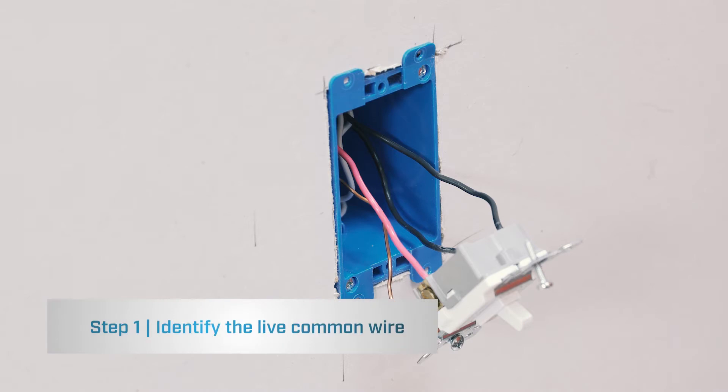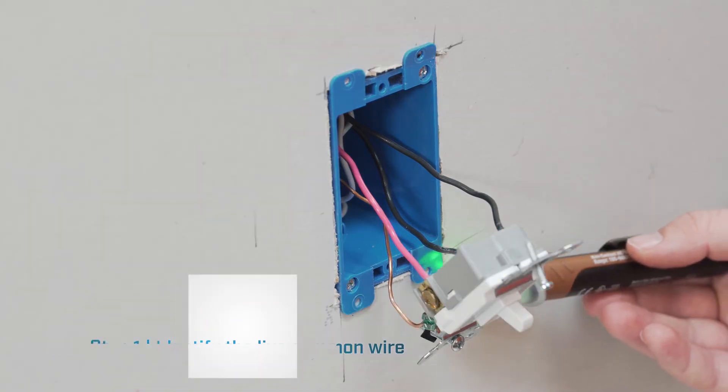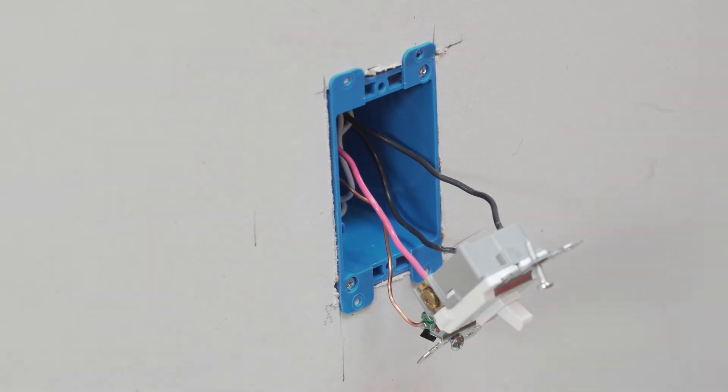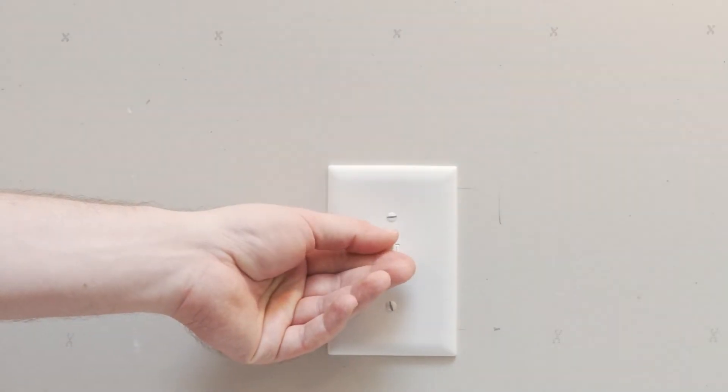You want to use a non-contact voltage detector to determine if the common wire is live. You can see that the detector is indicating that this wire is the live wire.